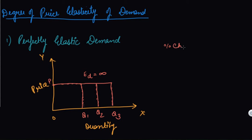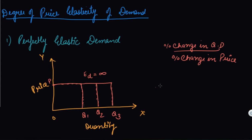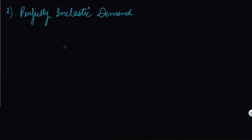At this point, the elasticity of demand is equal to infinity. Using the formula — percentage change in quantity demanded divided by percentage change in price — the quantity demanded has changed, let's say it became 30, but the change in price is zero. So anything divided by zero gives you infinity. Therefore, elasticity of demand here is infinity.